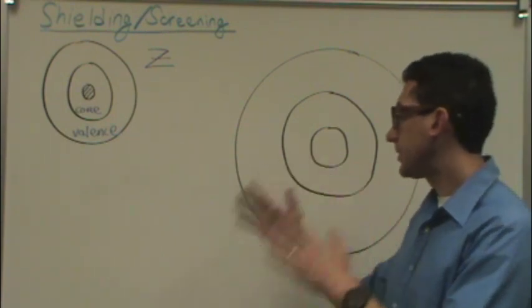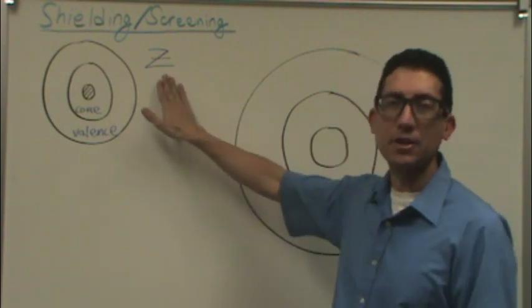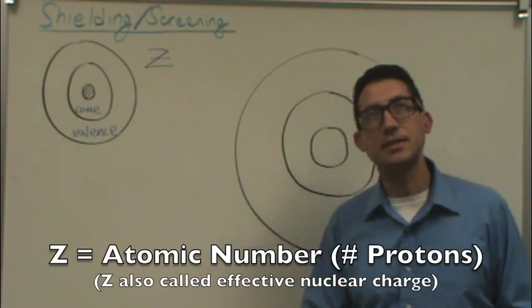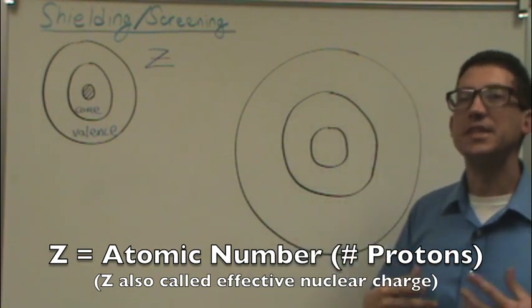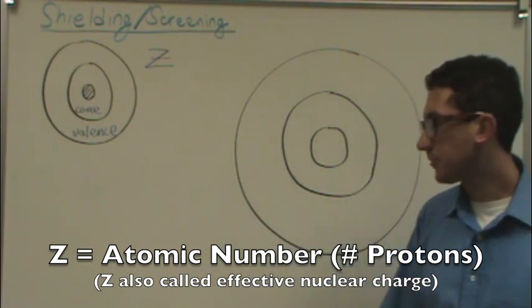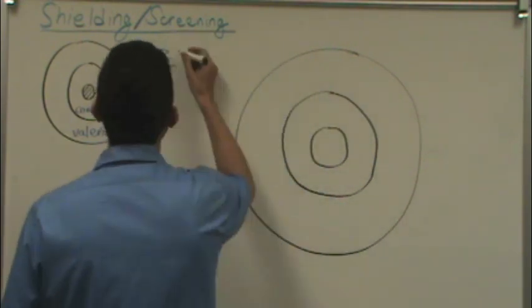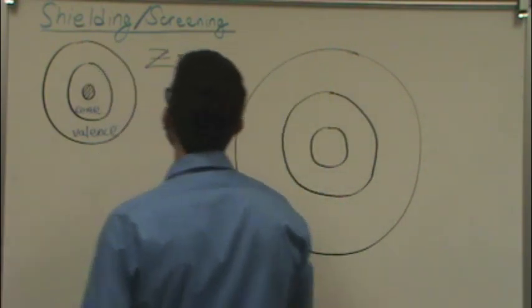So if we have a particular atom that has what's called a Z. I don't know if you remember this from before, but Z is the atomic number or the number of protons. So say, for example, that this atom has two protons.